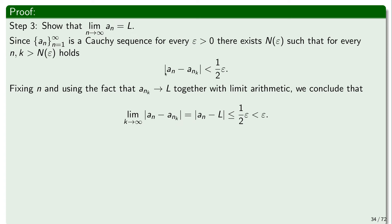Since this is strictly smaller than epsilon/2, when we pass to the limit we can say for sure this is smaller or equal to epsilon/2, and in any event smaller than epsilon. This concludes the proof, because we have proved that the sequence a_n converges to L. For every epsilon, there exists N(epsilon) such that for every n greater than N(epsilon), the distance of a_n from the limit is smaller than epsilon — so L must be the limit of the sequence.